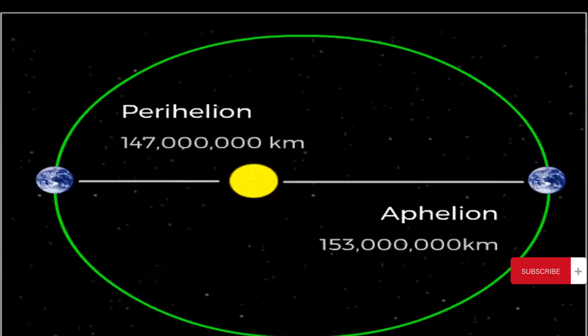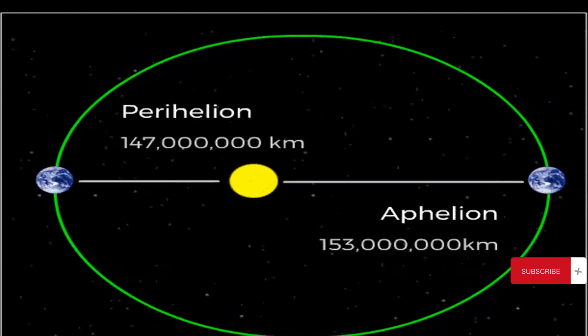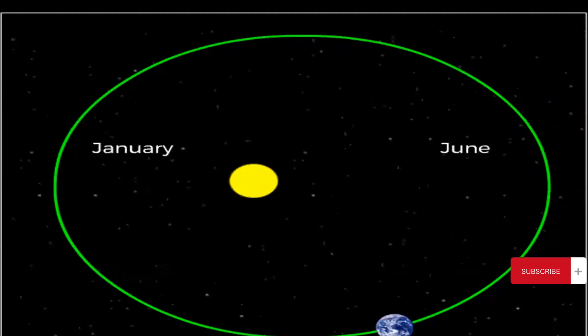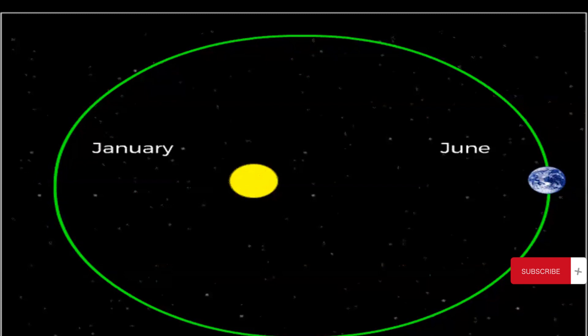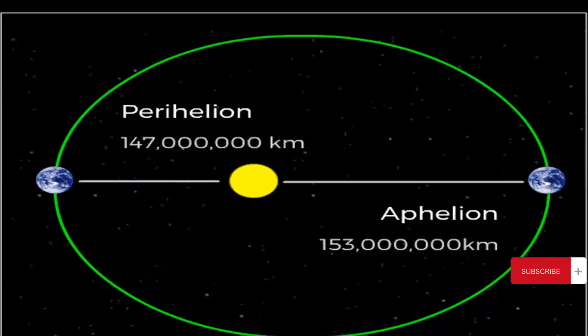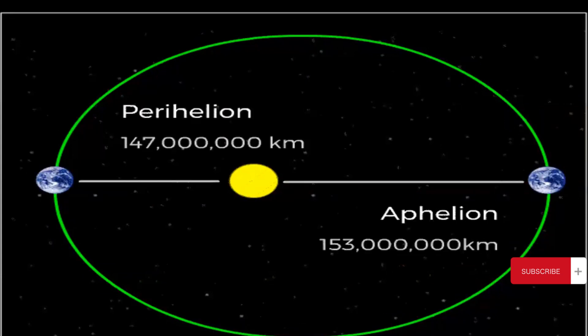Planets move in such a way that the sun is located at one of the foci. This means that the distance from the planet to the sun changes as it orbits. When it is closest to the sun, the distance is called the perihelion, which is the shortest distance. And when it is farthest from the sun, that distance is called the aphelion.